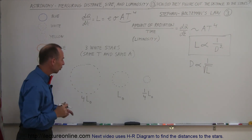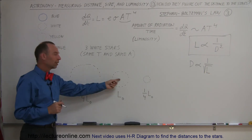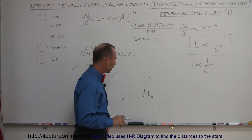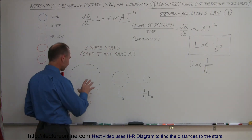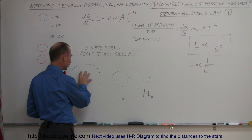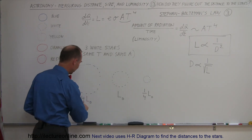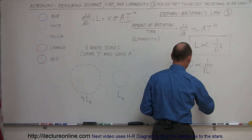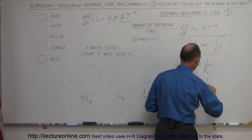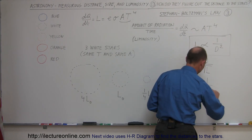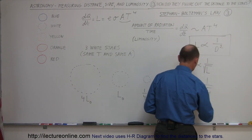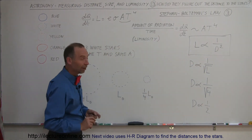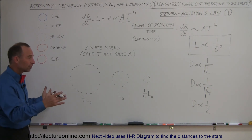Let's figure out where one star is relative to another. Since the brighter star will be closer, the question is how much closer. It depends on the relative luminosity — the distance is proportional to one over the square root of the difference in luminosity, which means the distance is proportional to one over two.